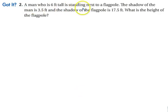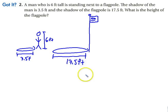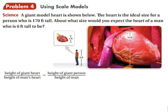A man who is 6 feet tall is standing next to a flagpole. So it might help to draw a professional picture—here's the flagpole. The shadow of the man is 3.5 feet, and the shadow of the flagpole is 17.5 feet. Set up a proportion and see if you get it right.